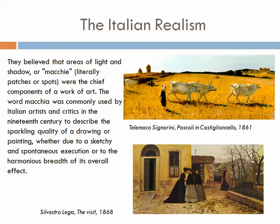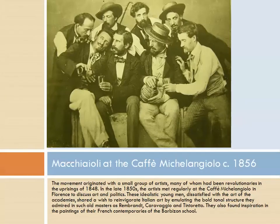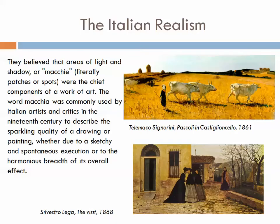The movement originated with this small group of artists, many of whom had been revolutionaries in the uprisings of 1848. In the late 1850s, the artists met regularly in this café. There they would discuss their ideas about politics and art. These idealistic young men were dissatisfied with the art of the academies and shared a wish to reinvigorate Italian art by emulating the bold tonal structure they admired in old masters such as Rembrandt, Caravaggio, and Tintoretto.